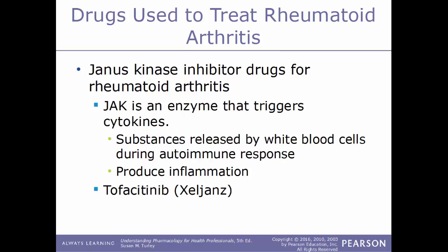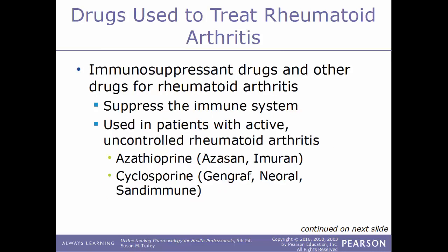Another type of drug used to treat rheumatoid arthritis are Janus kinase inhibitors, also known as JAK inhibitors. Janus kinases are enzymes that help trigger cytokines released by white blood cells during an autoimmune response, producing inflammation. By inhibiting Janus kinases, the amount of inflammation is limited. An example of this kind of drug is tofacitinib, sold under the trade name Xeljanz.